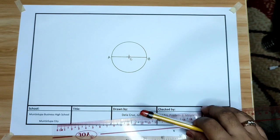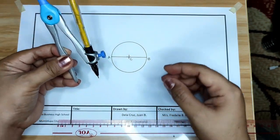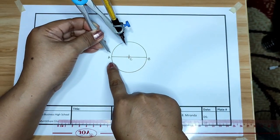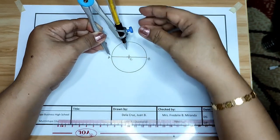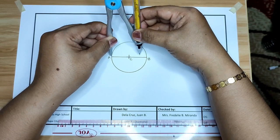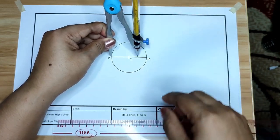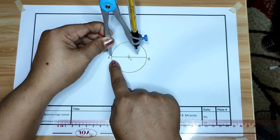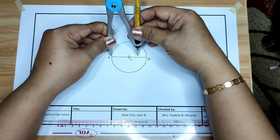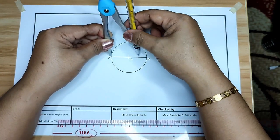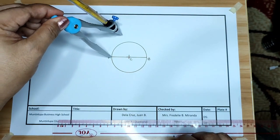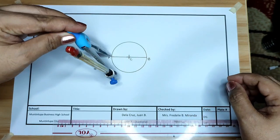Next, get your compass. Adjust your compass more than half of the radius. From point A, more than half of your radius. This is the half of the radius. It should be the opening of your compass more than half.